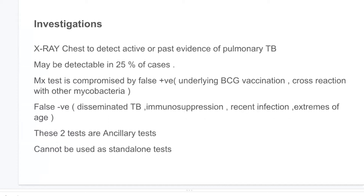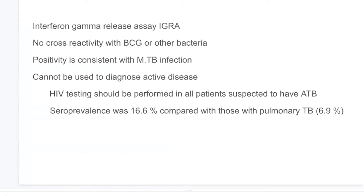The Mantoux test is compromised by false positive and false negative results. False positive results can occur in BCG vaccination and cross-reaction with other mycobacteria; false negative results can occur in immunosuppressed patients, disseminated tuberculosis, recent infection, and extremes of age. These two tests are considered ancillary and cannot be used as standalone tests. Interferon-gamma release assay is slightly superior to the Mantoux test because there is no cross-reactivity with BCG or other bacteria, and positivity is consistent with Mycobacterium tuberculosis infection, but cannot be used to diagnose active disease.